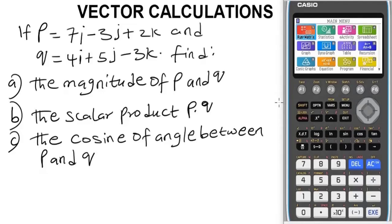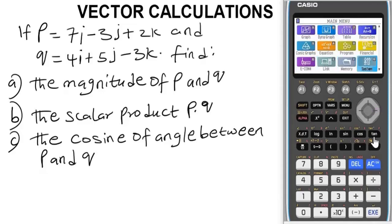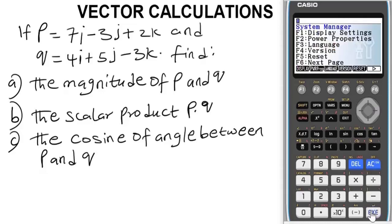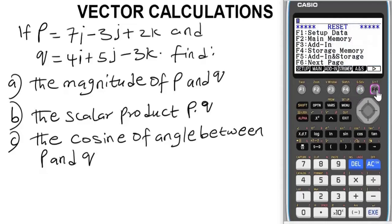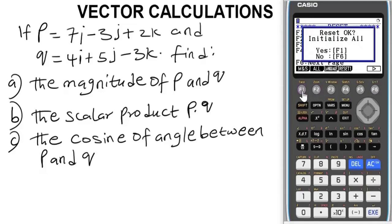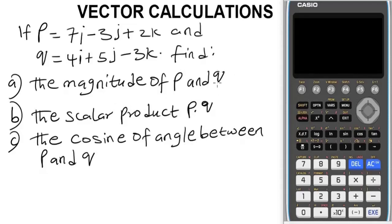The very first thing you have to do is reset it. The purpose of resetting is to wipe out whatever previous values you might have stored in the calculator. To quickly reset it, navigate using the navigation button to System, then press Includes, then press F5, then F6 for the next page, then press F2 to initialize or F1, and it will begin to initialize. The equals sign on this calculator stands for 'equal to'.